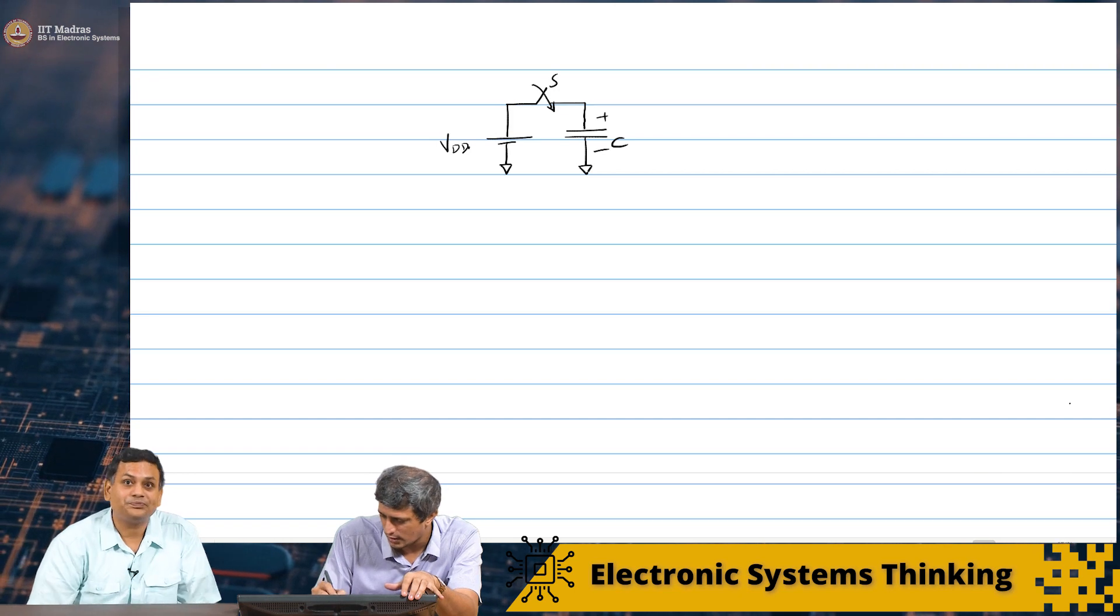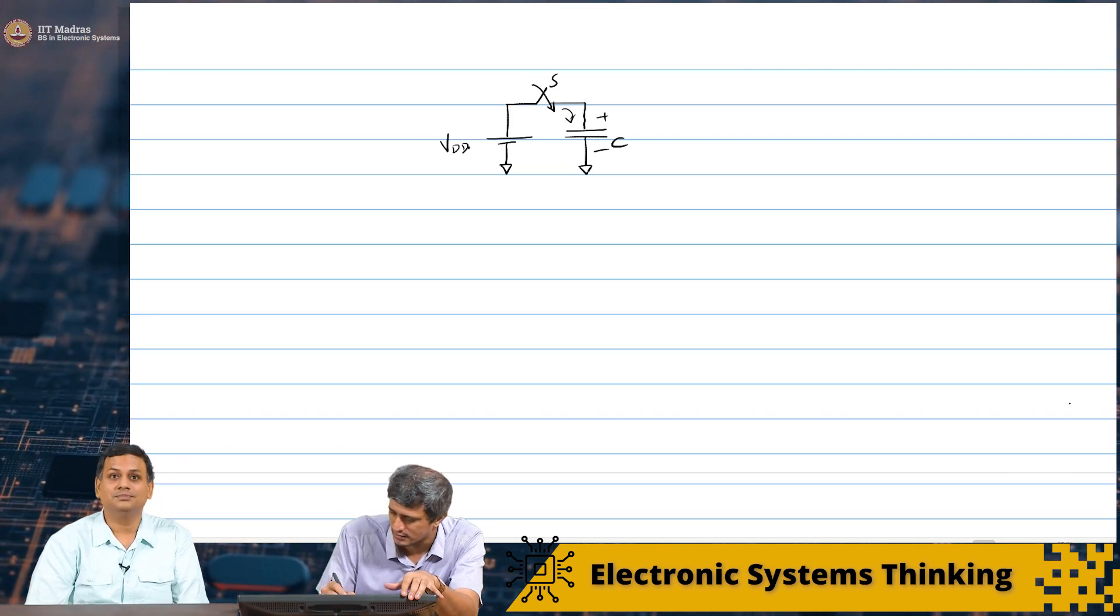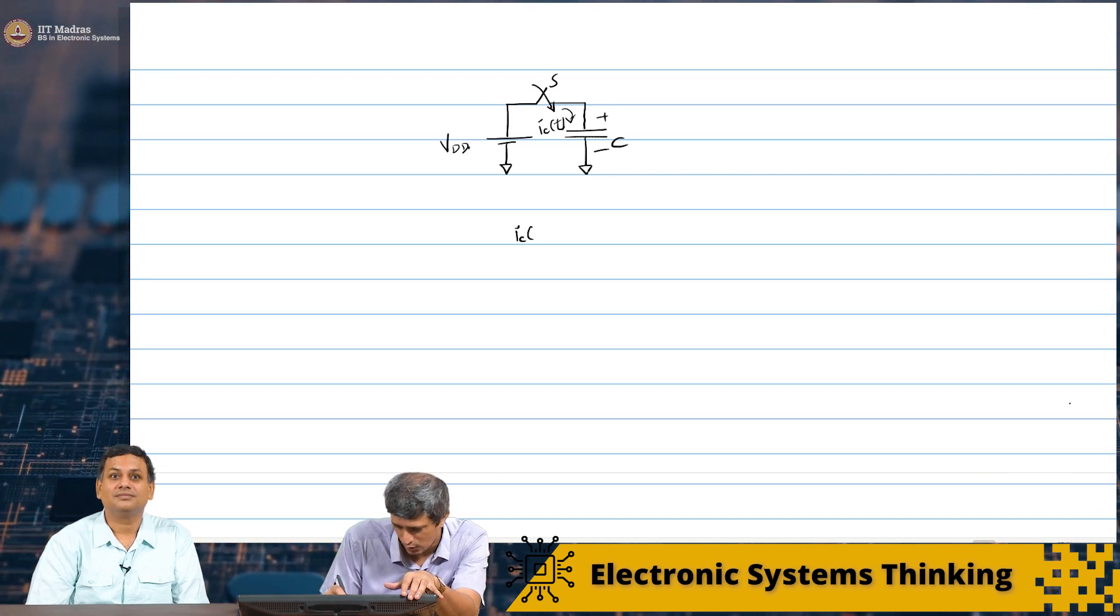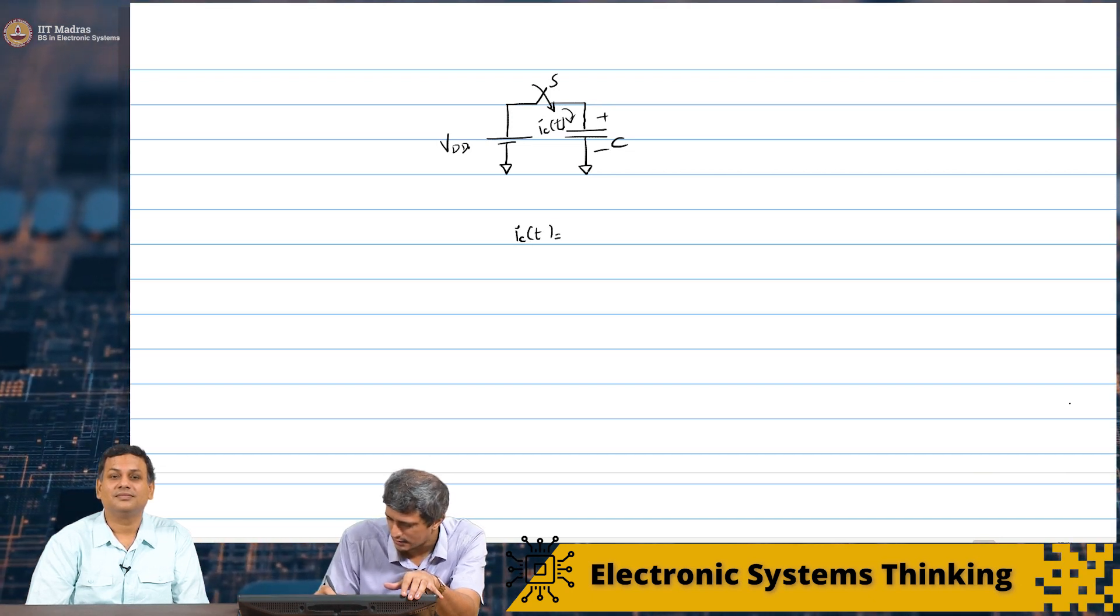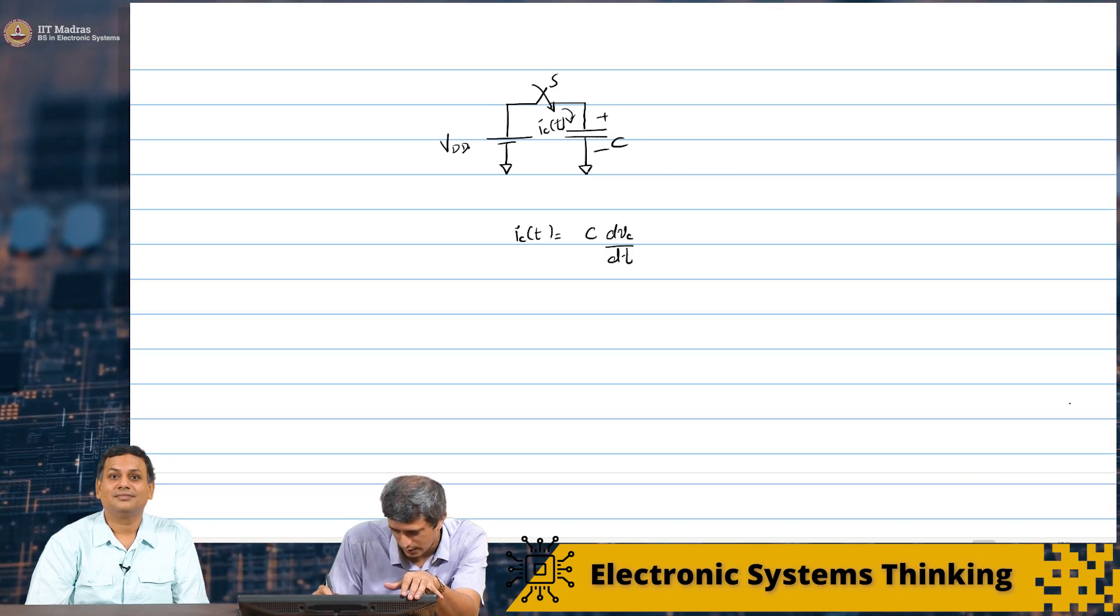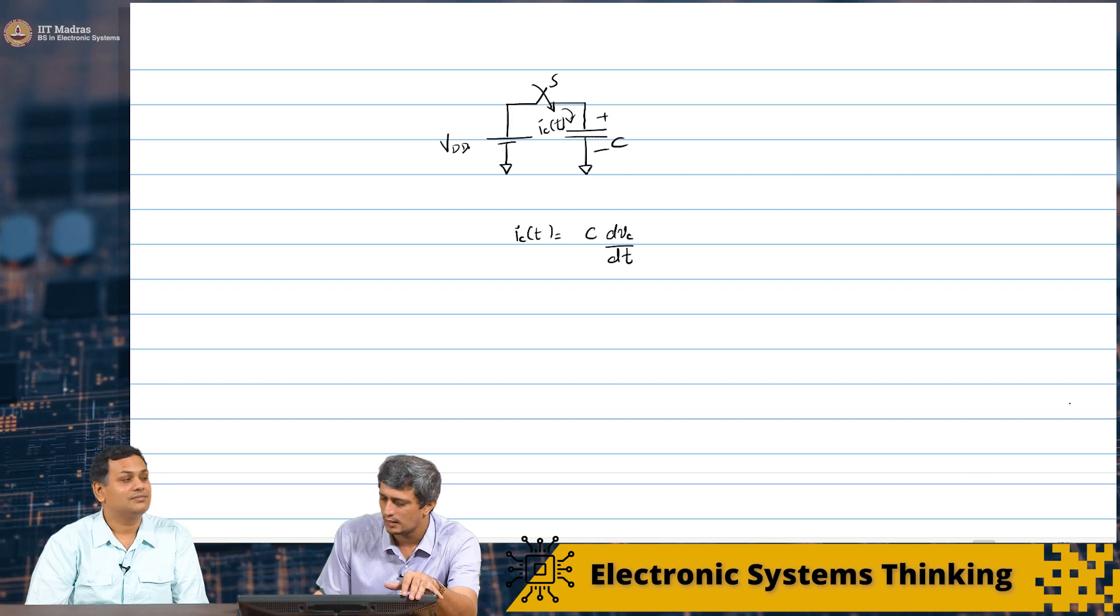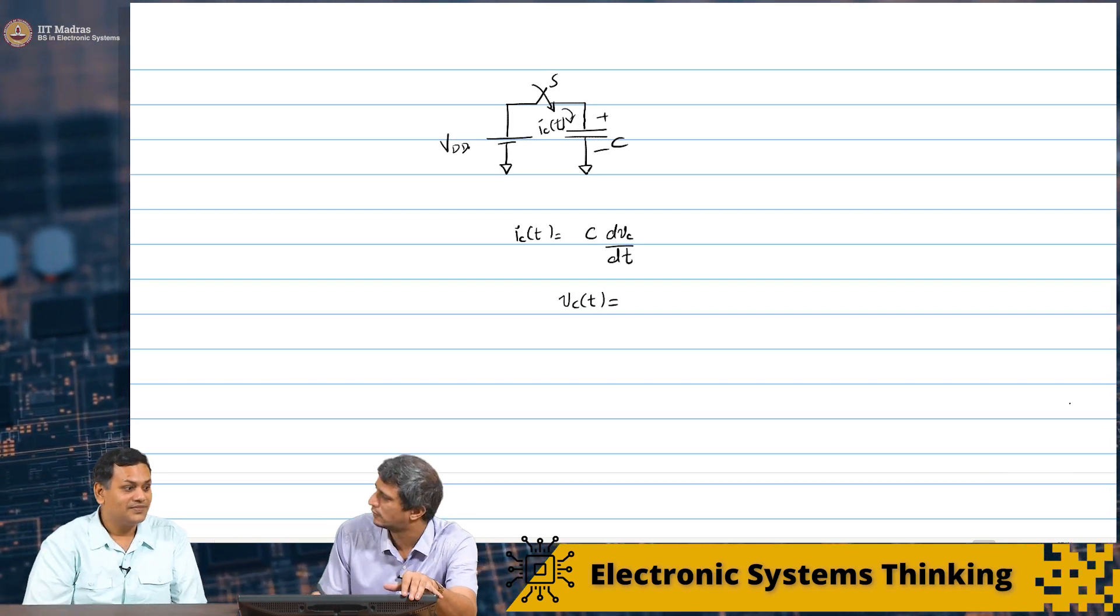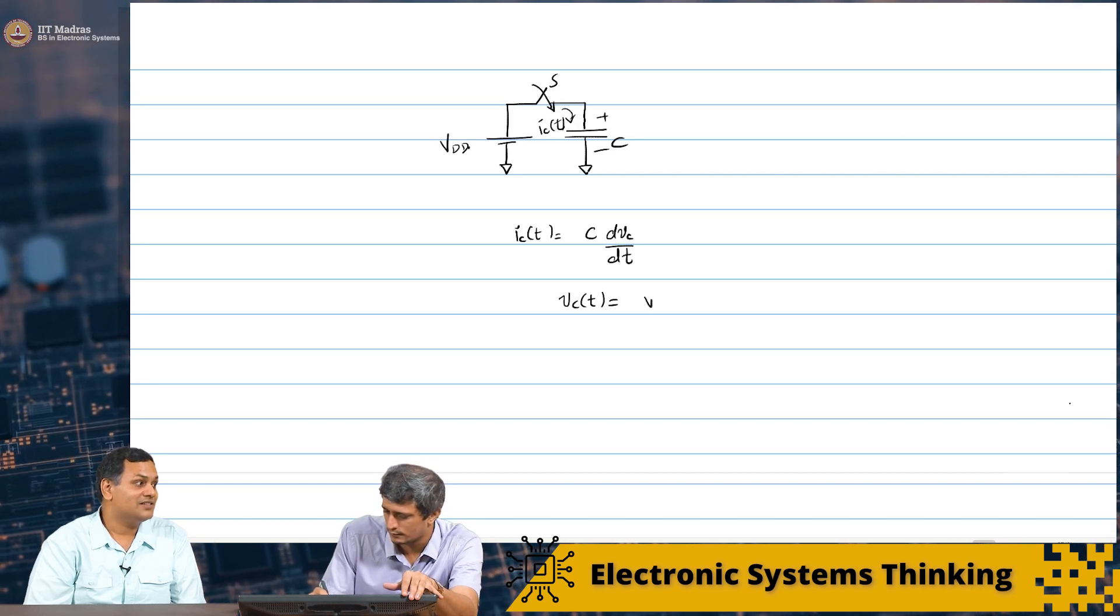So, which means that the capacitor will just look, it will look like a step as well. So, what do we have? We are saying, almost instantaneously the capacitor voltage will go to the input because KVL has to be satisfied.